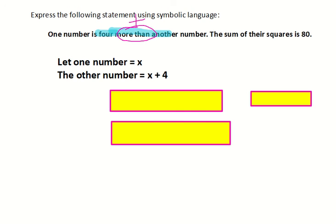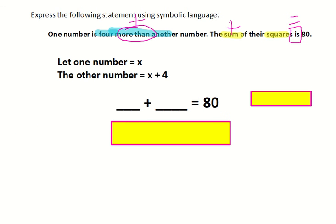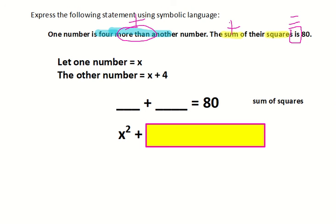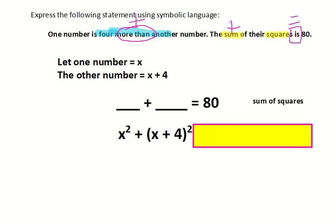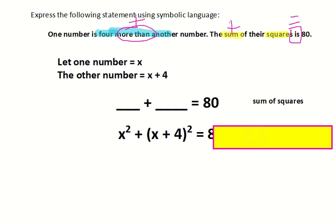In the second sentence, it says the sum of their squares is eighty. Sum means add. Squares means to square each of those numbers. So the sum of their squares is eighty. We have to make sure we square each number when we plug them in. First plug in x for one of them, so we have x squared. Then for the other one, we have x plus four — since it's a quantity, we put parentheses around it when we square it — so x plus four, quantity squared. And that equals eighty. There's our symbolic language for this question.